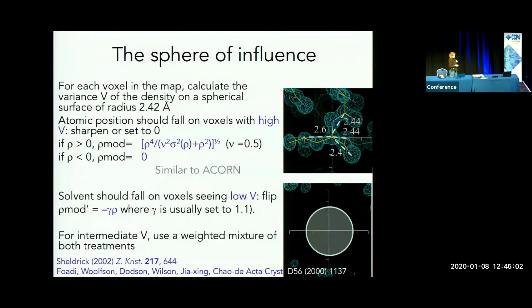The Shell XE approach is the sphere of influence — an attempt to introduce more stereochemistry into the process. It's a high-resolution approach similar to ACORN, using a different function but with the same effect: to sharpen density in the protein region, set negative density to zero, and flip density in the solvent region. This is decided by sitting on each voxel in turn and looking whether it's surrounded by features typical of the 1,3 atom distances in a polypeptide.